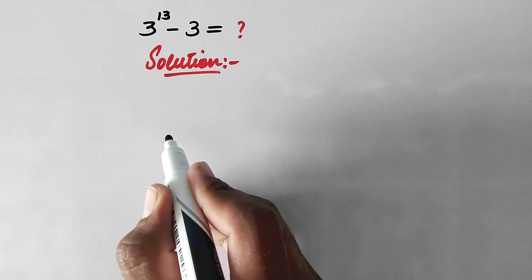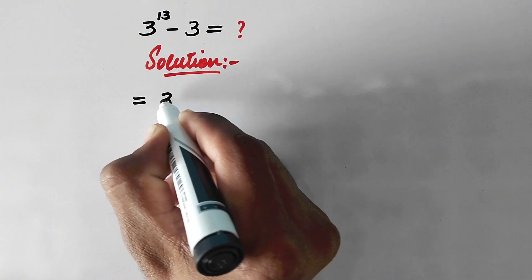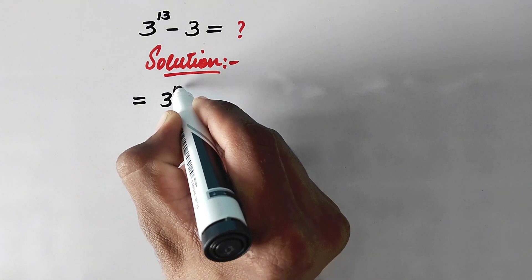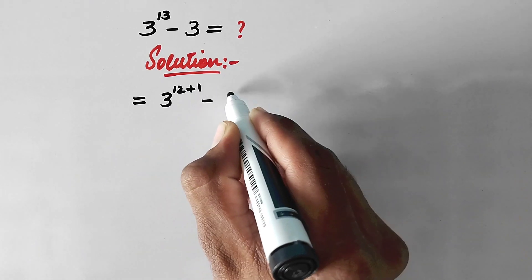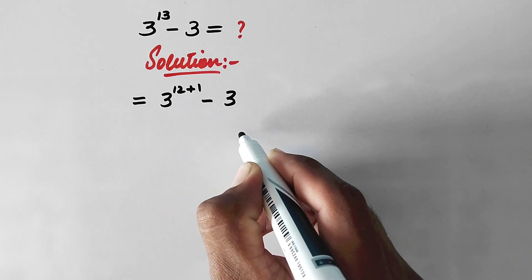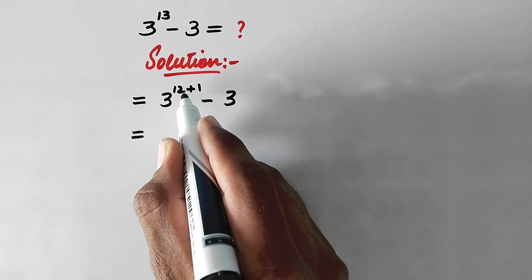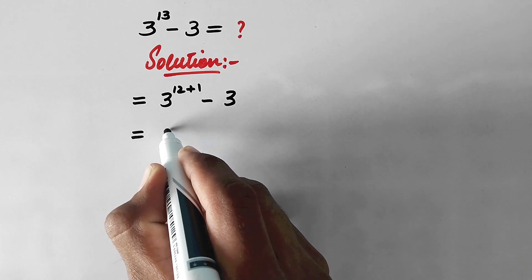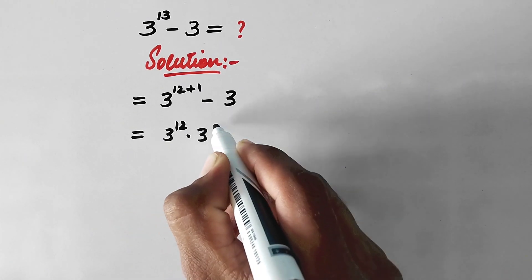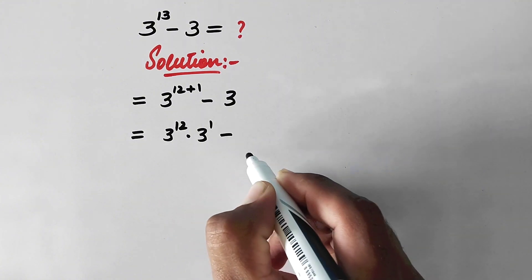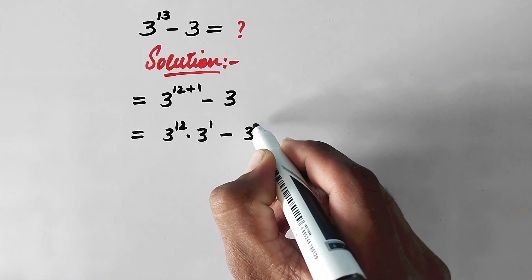In the first step, we write 3 to the power 13 — here 13 can be written as 12 plus 1 — so we have 3 to the power 12 plus 1, minus 3. By following a property of exponents, we can write this as 3 to the power 12 times 3 to the power 1, minus 3.